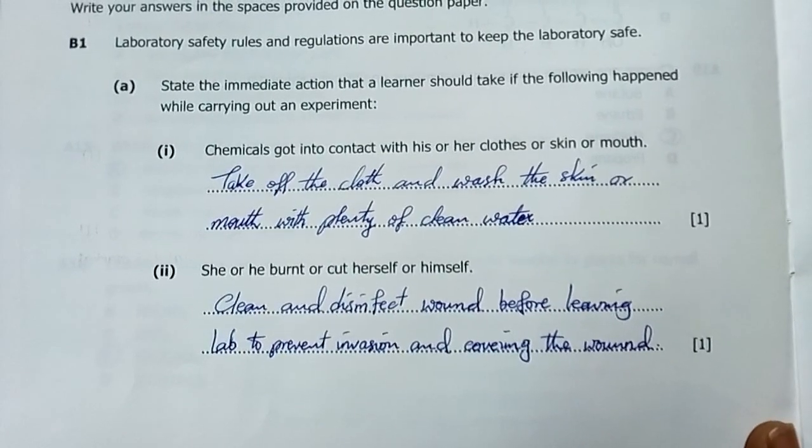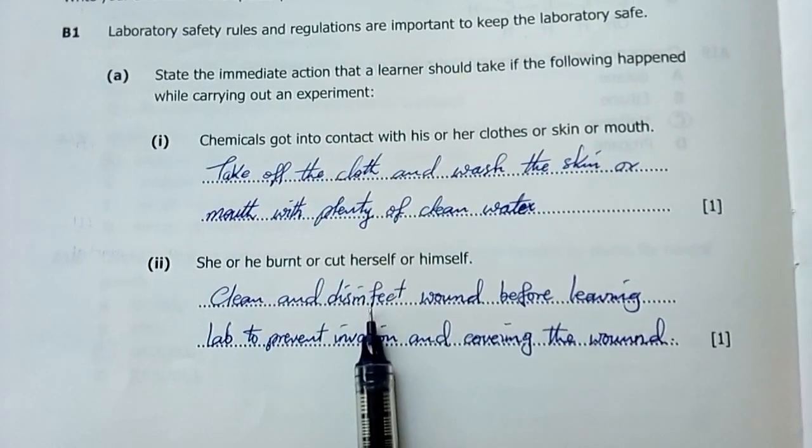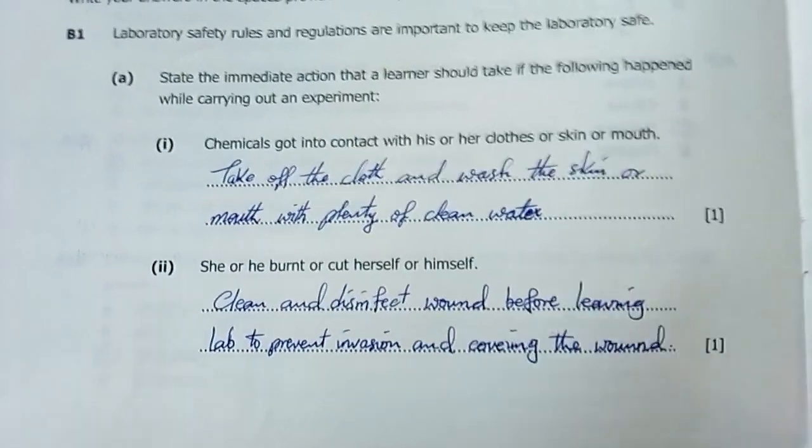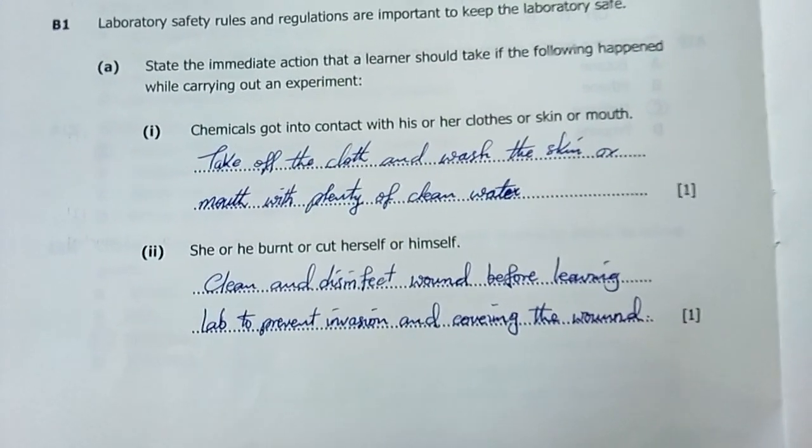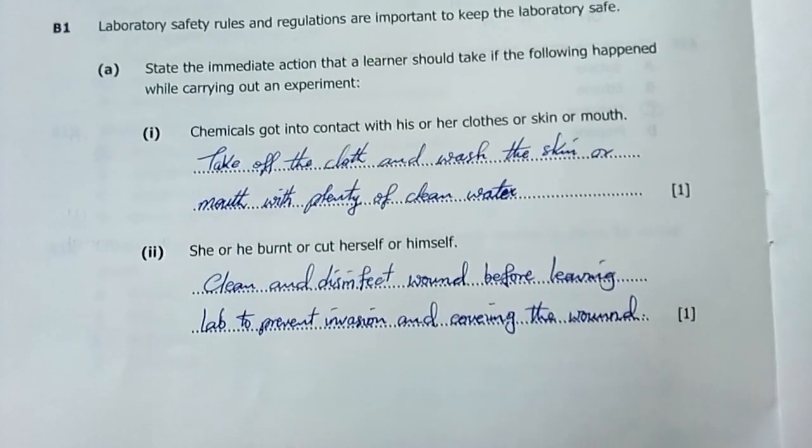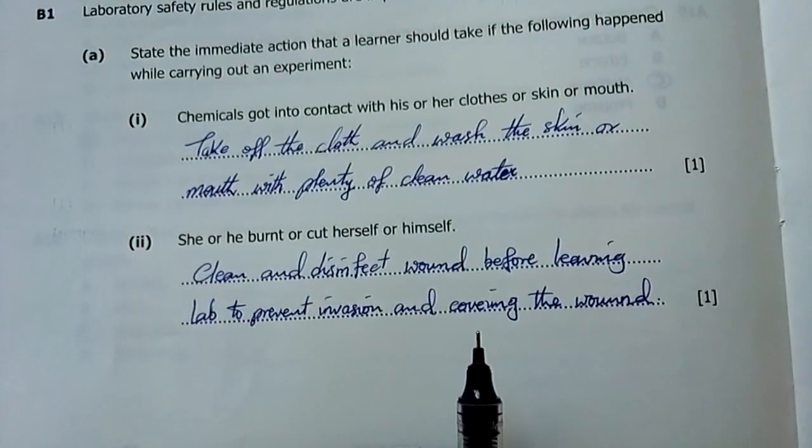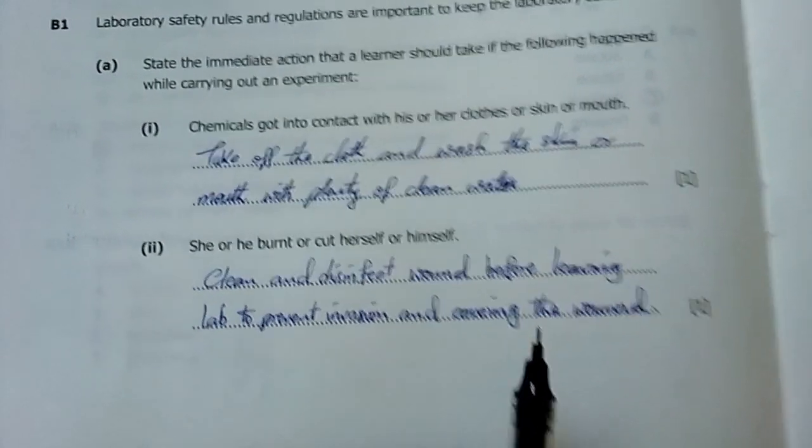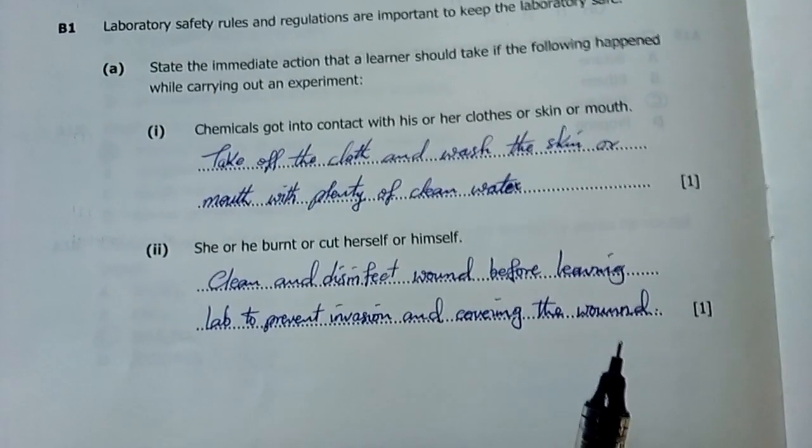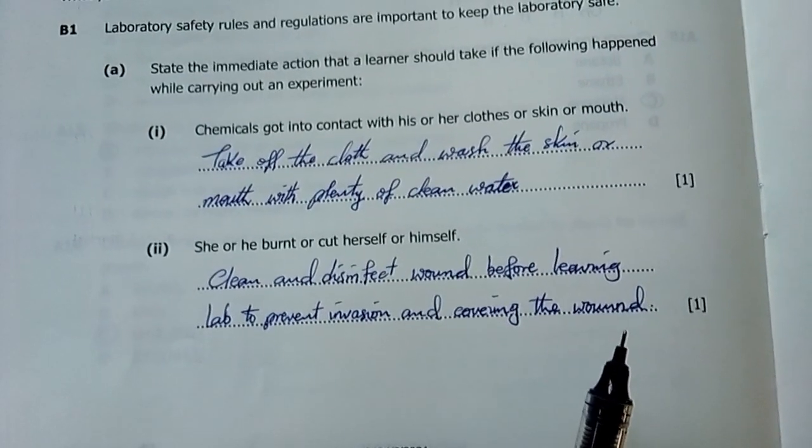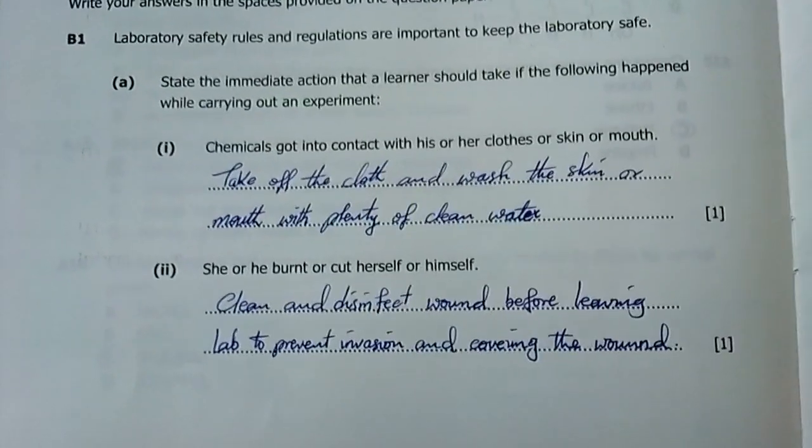Number one, chemicals got into contact with his or her clothes or skin or mouth. You take off the clothes and wash the skin or mouth with plenty of water or copious amounts of water. Therefore, you wash off the chemicals to reduce the contact time. Number two, she or he burned or cut herself or himself. Clean and disinfect the wound before leaving the lab to prevent invasion and covering the wound.